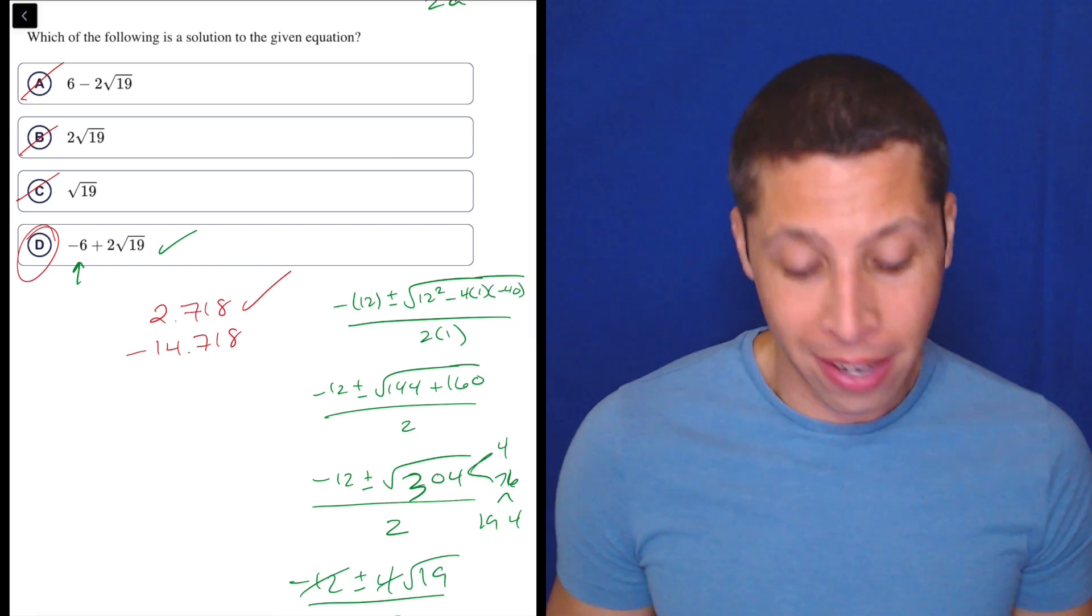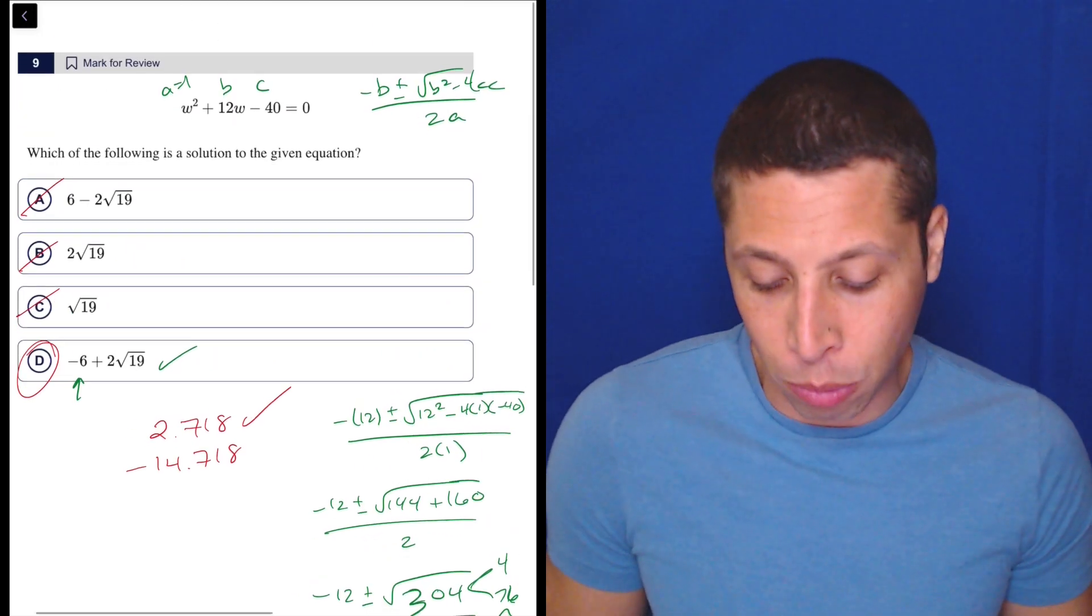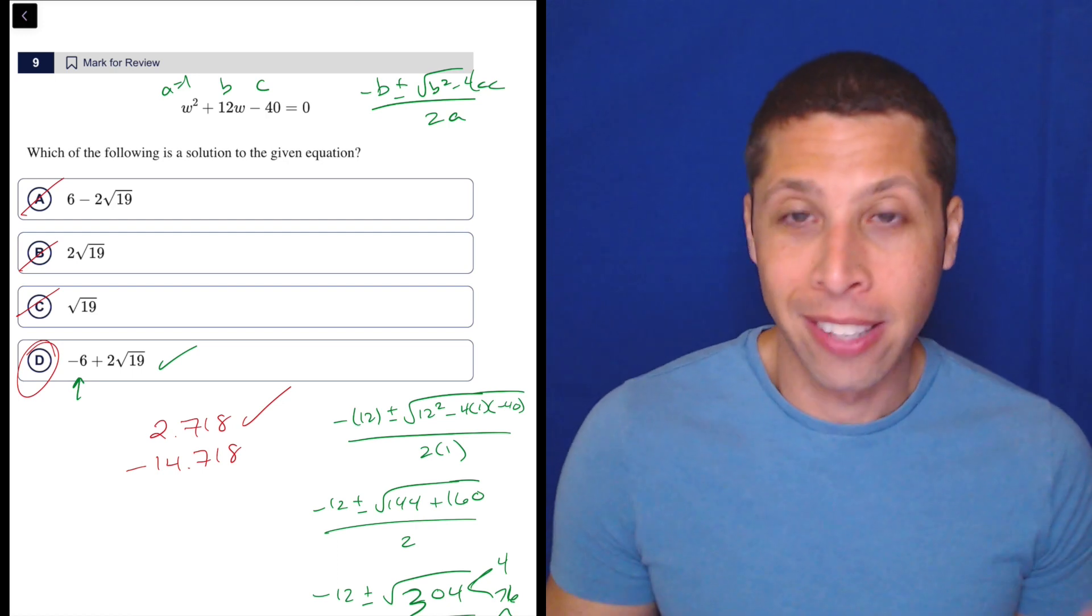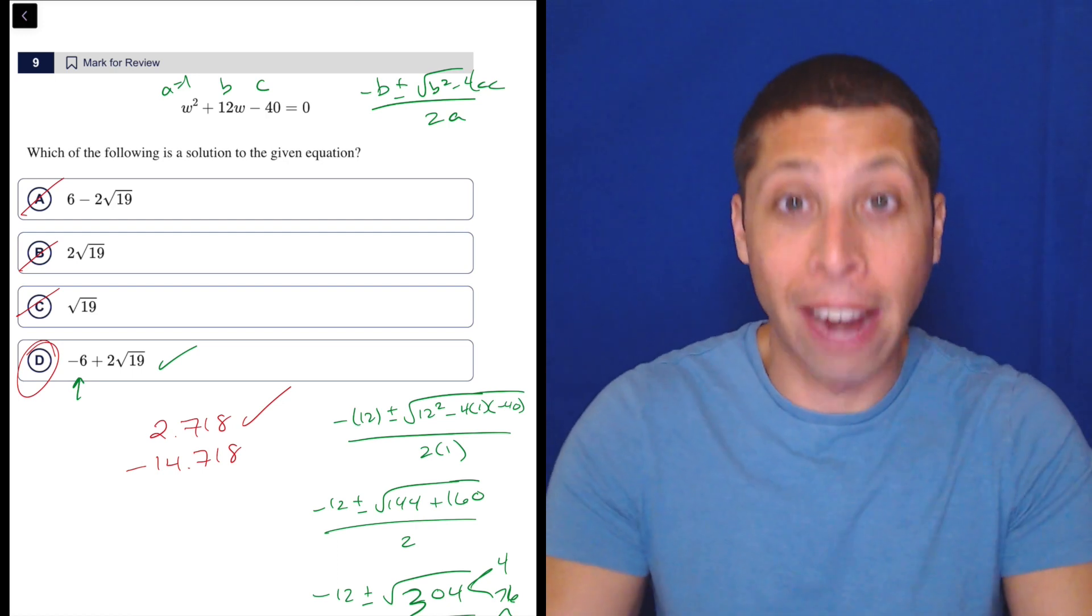There's a little bit of a shortcut, but even that, I wouldn't trust it. This is the hard module. Number question nine. There could be traps. So better off to just let the computer do it for us. Save the time, save the brainpower, and guarantee the points.